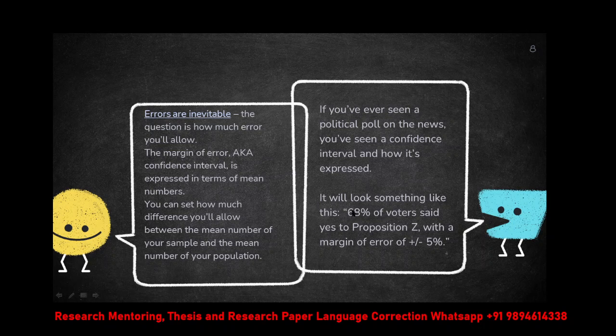For instance, in an election poll campaign prediction, they say 68% of voters said yes to proposition Z. But we are not sure, and sometimes the poll prediction becomes wrong as well as correct. When it becomes wrong, you may wonder why — because there will always be a plus or minus 5%. That's why you can't rely on those results 100%. But majority of the time it will be correct if they used a proper sampling method and technique.